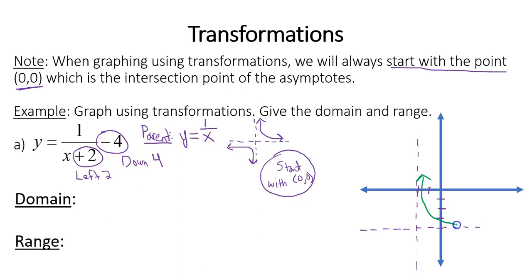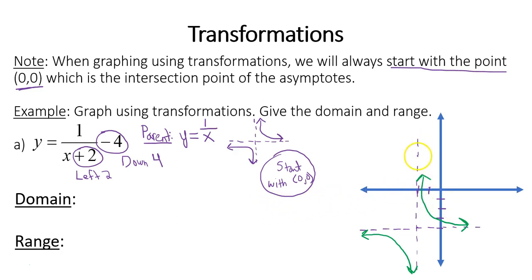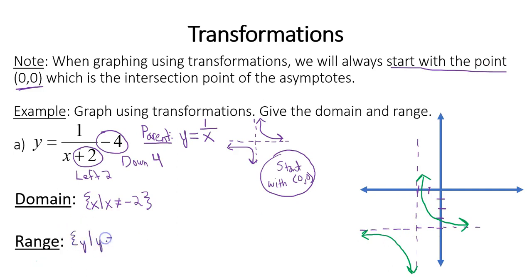In the top right region, we hug the asymptotes but don't actually cross them, and then bottom left. To find the domain, the graph is defined everywhere to the left and right of the vertical asymptote. The only restriction is when x is negative 2, since negative 2 plus 2 makes the denominator 0. So the domain is x such that x cannot equal negative 2. The range is defined everywhere above and below the horizontal asymptote except at y equals negative 4, so the range is y such that y cannot equal negative 4.